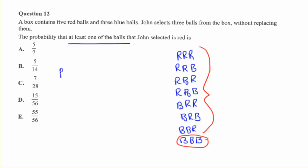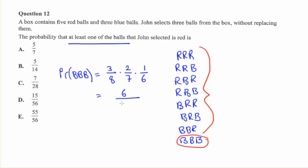What's the probability that he draws three blue balls in a row? For the first draw, there are 3 blue balls out of a total of 8. We're not replacing them, so we're left with 7 balls and only 2 blue balls to choose from. Then with 6 balls remaining, there's only 1 blue ball left. So we get 6 over 336 — cancelling the sixes gives us 1 over 56. That's the probability of getting three blue balls in a row.